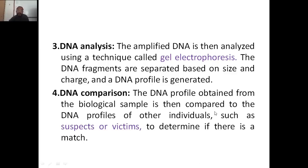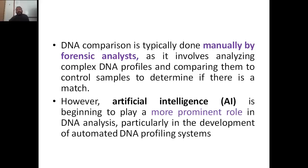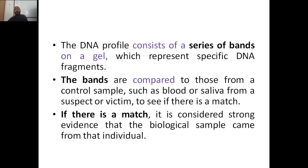DNA comparison is typically done manually by forensic analysts, analyzing complex DNA profiles and comparing them to controlled samples to determine if there is a match. However, artificial intelligence is beginning to play a very important role in DNA analysis, particularly in the development of automated DNA profiling systems. The DNA profile consists of a series of bands on a gel which represent specific DNA fragments, and the bands are compared to those from the control sample — such as blood or saliva from the suspect or victim — to see if there is a match.